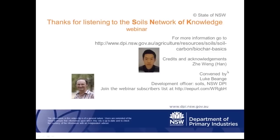Thank you very much, Han — that was very interesting. Peter Entwistle asked about the rates of biochar used in the original trial that Lucas put down. It's 10 tonnes per hectare into the top 10 centimetres of soil, equivalent to about 1%. When we did the trial on top of the old trials, we used exactly the same dose — 10 tonnes per hectare — and also the same biochar.